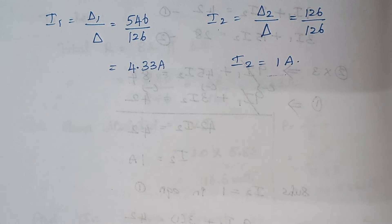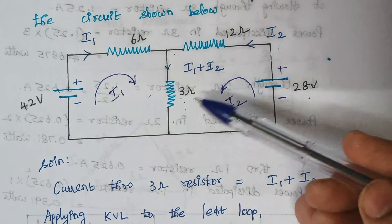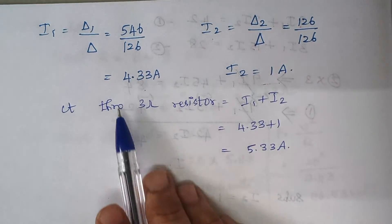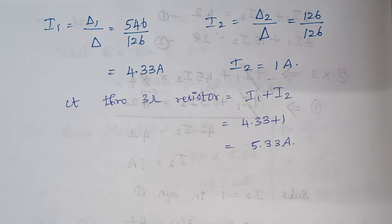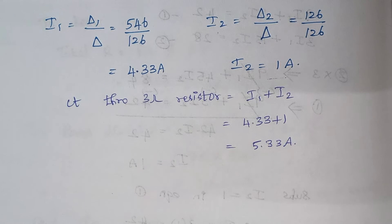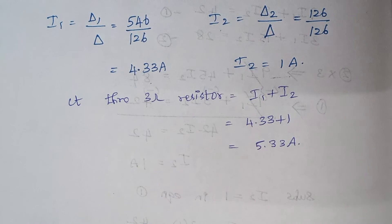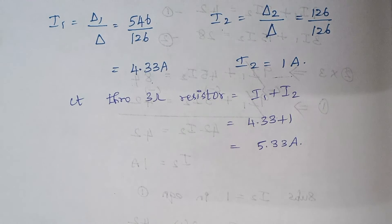From the diagram, the current flowing through the 3 ohm resistor is again I1 plus I2. Substituting I1 = 4.33 and I2 = 1, the current through the 3 ohm resistor is 5.33 amps — the same answer as before. Both methods give the same result. You can solve the problem using whichever method you prefer; the main thing is to be clear on the concept. Even if you assume the current direction in reverse, you will get the same answer. If you have any doubts, let me know in the comment section. Thank you.